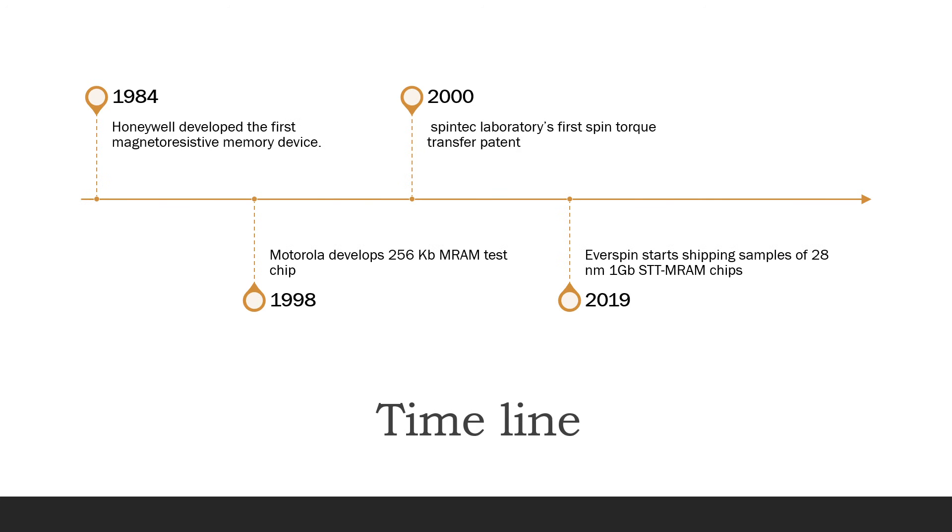The timeline: MRAM is not actually a new technology, but so much R&D is done right from the beginning of early 80s to late 70s. Late 70s to early 80s. So the first major breakthrough was Honeywell developing its first magnetoresistive memory device. And after that, Motorola started to invest in this technology. Motorola actually successfully developed a 256 KB MRAM chip.